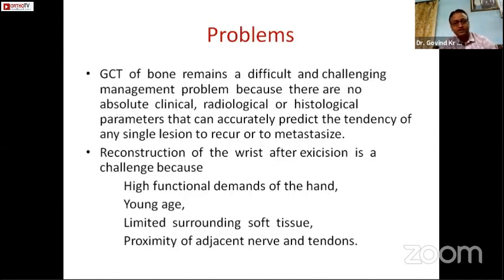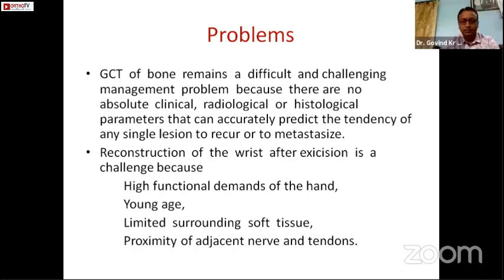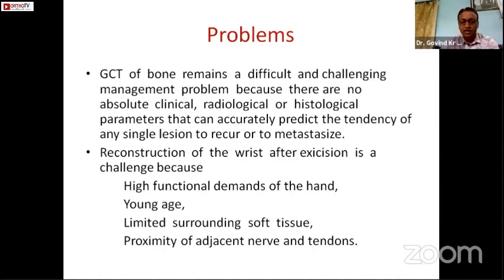The problem with GCT is that it remains a difficult and challenging management problem because there are no absolute clinical, radiological, or histological parameters that can accurately predict the tendency of any single lesion to recur or metastasize. Reconstruction of the wrist after excision is a challenge because of the high functional demand of the hand, the younger patient age, limited surrounding soft tissues, and the proximity of adjacent nerves and tendons.